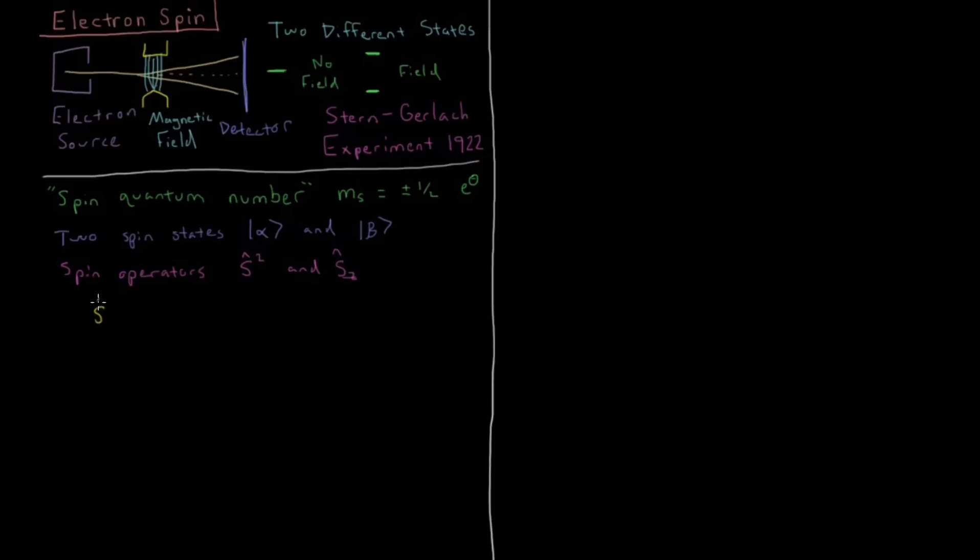Well, we can have s squared act on alpha, and alpha and beta are both eigenfunctions of s squared. And just like acting l squared on a state with l, we get h bar s, s plus one as our eigenvalue, and then alpha back again.